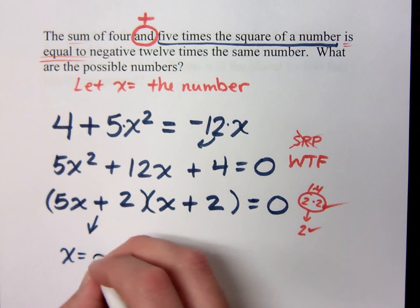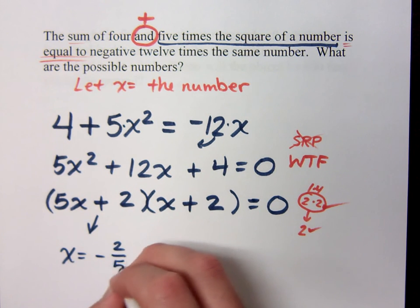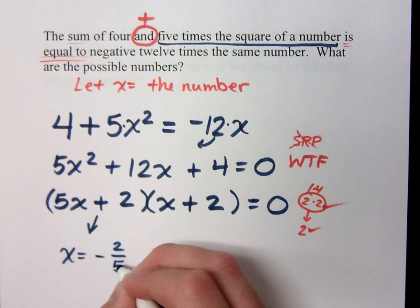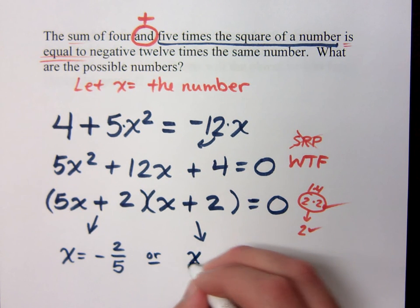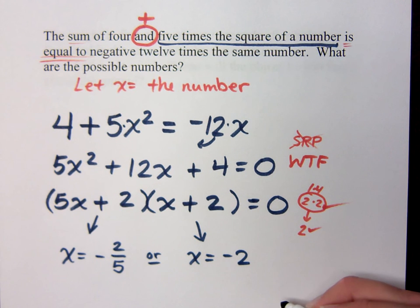Solving for x, I get negative 2 fifths by subtracting the 2, dividing by 5. My other solution is x equals negative 2. So those are my solutions.